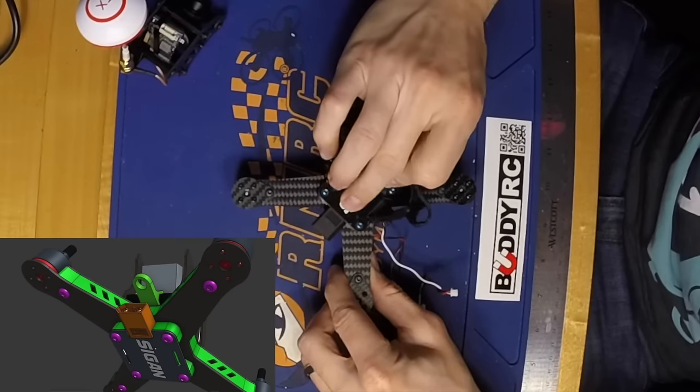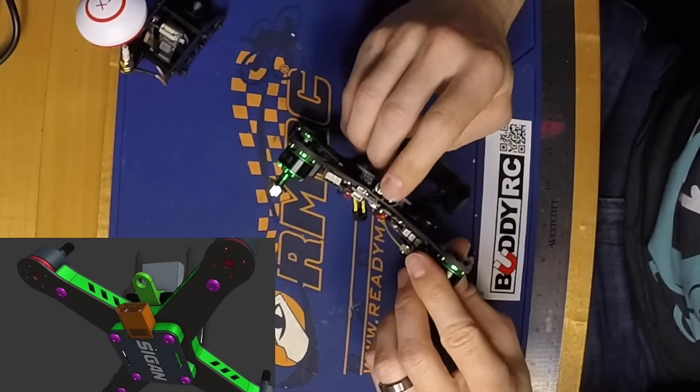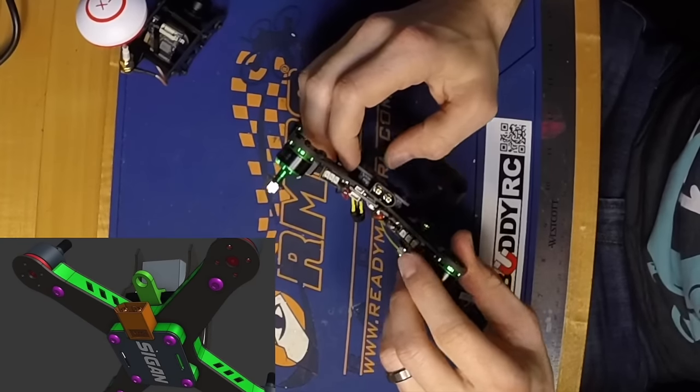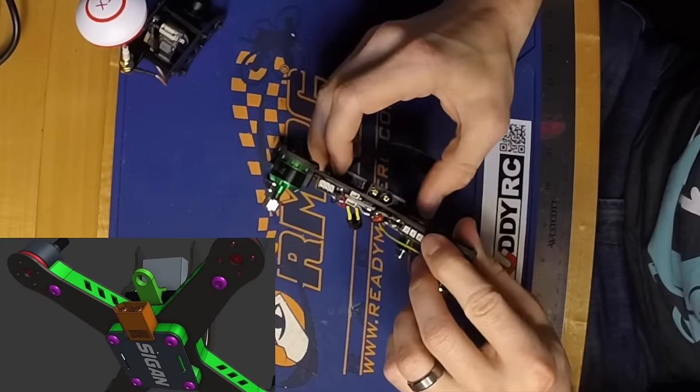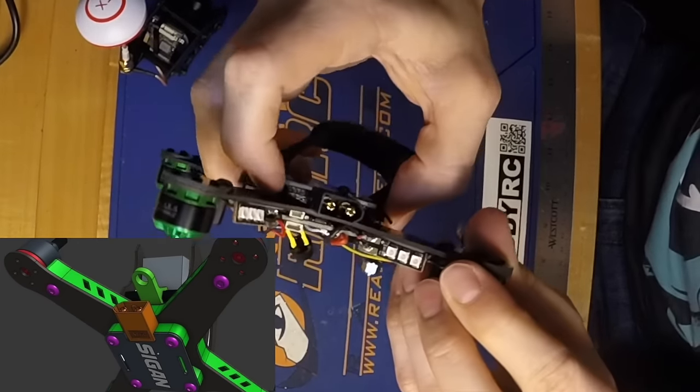I started with the PDB. It goes here on the bottom, and I soldered the XT60 connector onto it, then mounted it to the bottom plate with this 3D printed part.